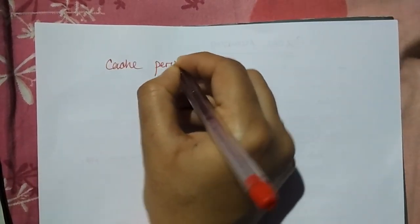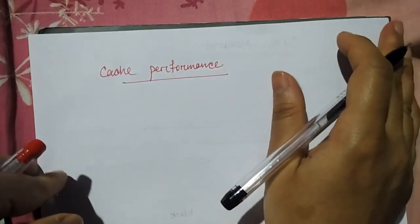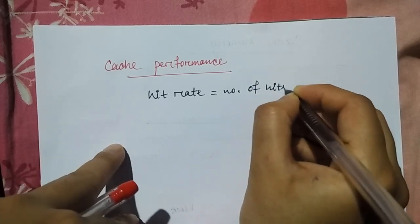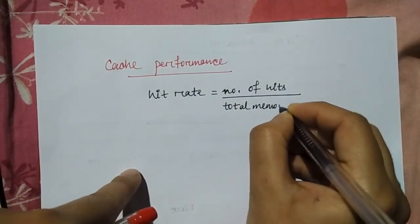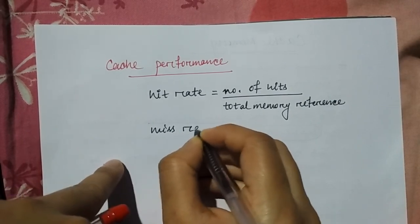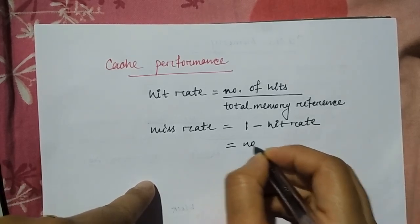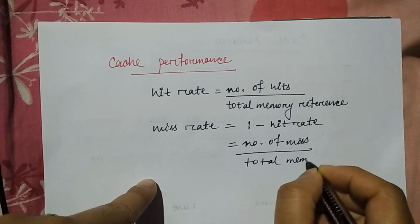For cache performance, we have a formula. The hit rate is the number of hits divided by total memory references. The miss rate is one minus the hit rate, or you can write it as the number of misses divided by total memory references. You can calculate both for cache.